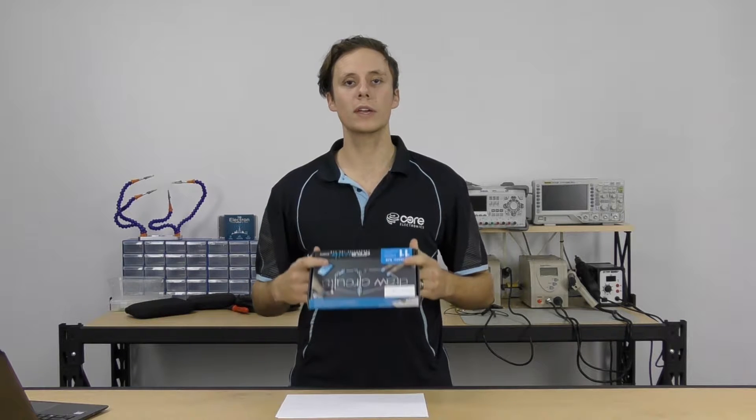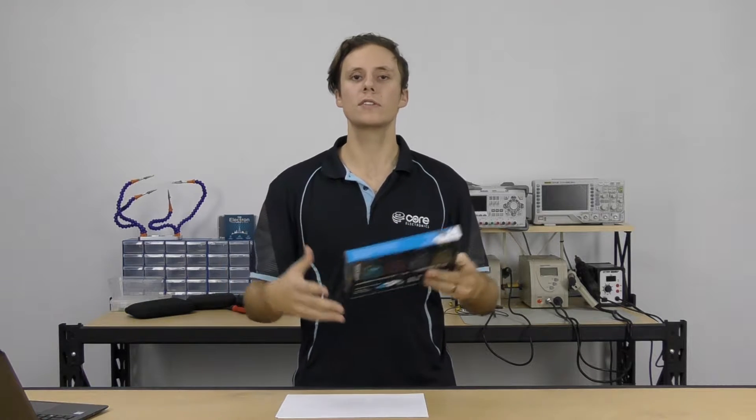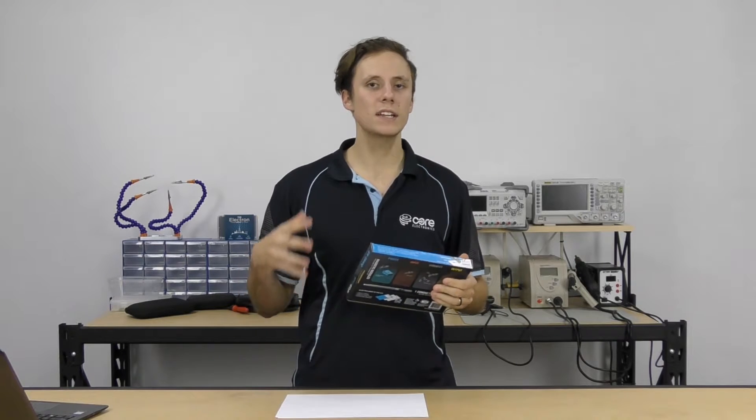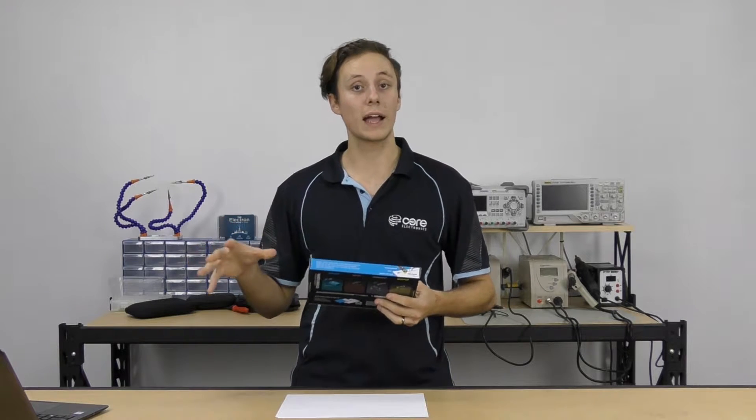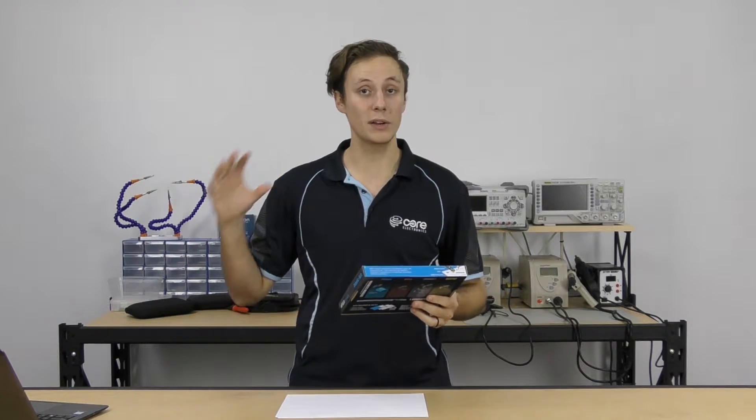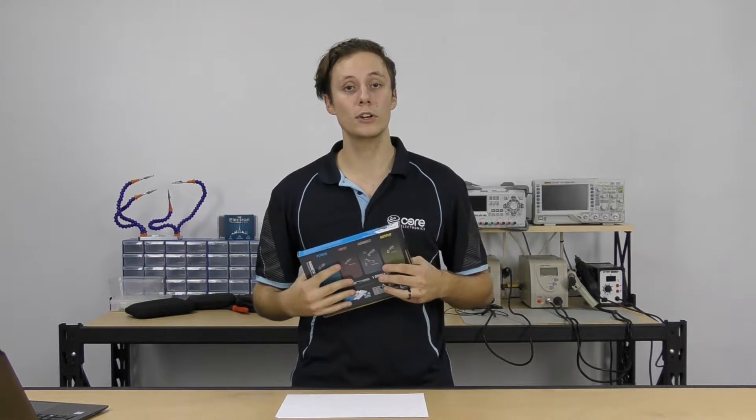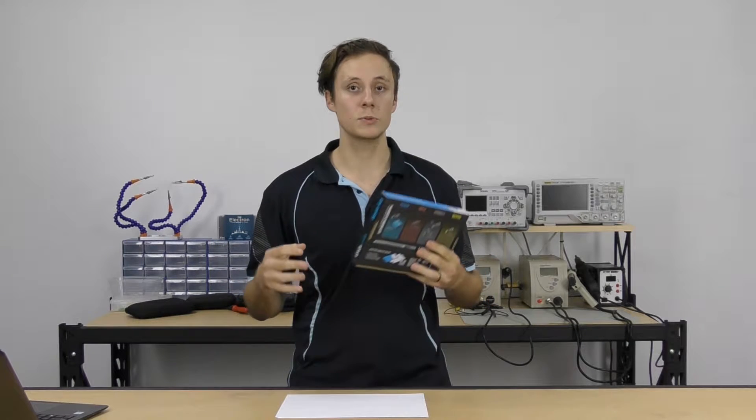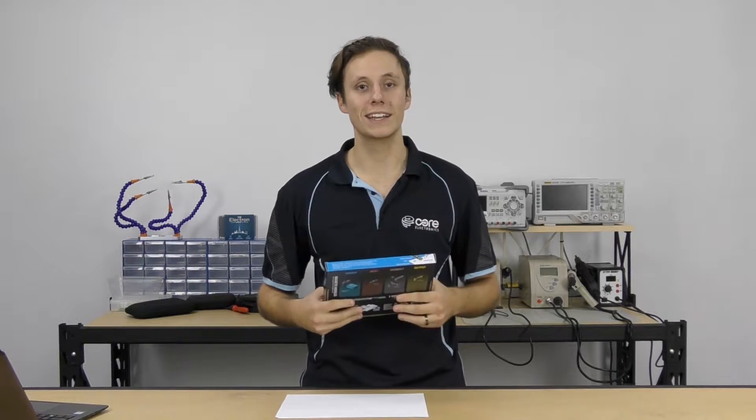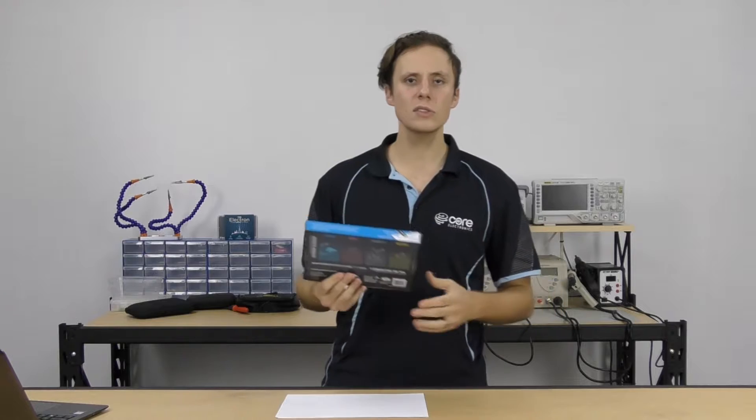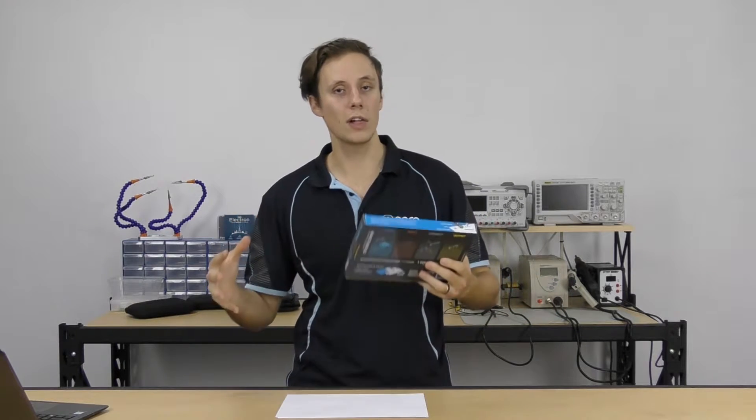But today we're going to be looking at what it brings to the classroom, how it differs from all of the other STEM products that are out there and which kit is going to be best in an educational setting. So there's two main kits that we're going to be looking at in the eyes of educators. We've put those together as bundles on our site. We've got the Basic Kit and the Maker Kit, and the Educator versions come in 10 packs of these. The Maker Kit comes with a few more extras added on there, some extra pens, extra resources, in case things go missing in a classroom as they usually do. The Basic Kit is just the 10 Basic Kits. But today, let's look at why it is that you would use CircuitScribe in a classroom.